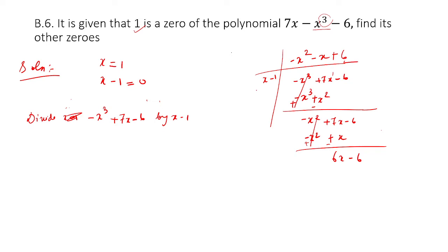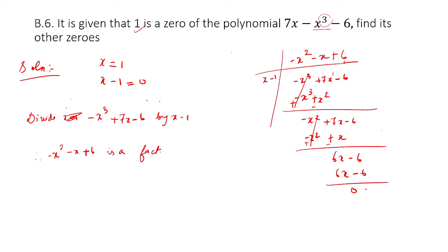Because you should multiply x by 6 in order to get 6x, x into 6 gives you 6x minus 6. So this is 0. Therefore, minus x squared minus x plus 6 is a factor.